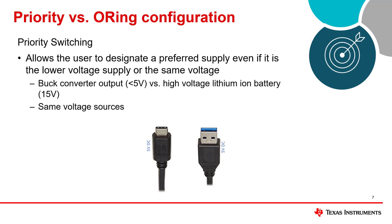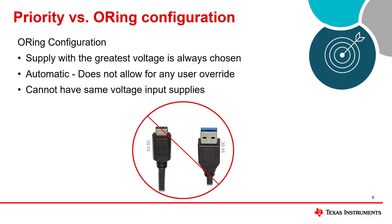A priority configuration allows the user to set a supply to be prioritized regardless of its voltage. For instance, if you have a battery at a higher voltage than your wired connection, you wouldn't want the battery to drain first. A priority configuration is also needed for systems which have the same input voltage supply, so that a constant evaluation of which supply is greater is not occurring. An ORing configuration instead always chooses the greater supply to deliver power to the load. This is a type of automatic switchover which does not allow for any user override, and should only be chosen when the two input supplies are not the same and the greater input power supply is always preferred.